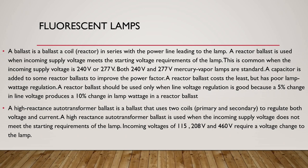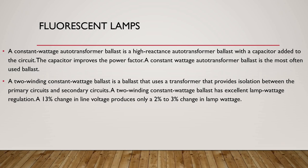A high reactance autotransformer ballast uses two coils — primary and secondary — to regulate both voltage and current. It is used when the incoming supply does not meet the starting requirements of the lamp, such as incoming voltages of 115, 208, or 460 volts. A constant wattage autotransformer ballast is a high reactance autotransformer ballast with a capacitor added to the circuit to improve the power factor, and it is most often used. A two-winding constant wattage ballast uses a transformer that produces isolation between the primary and secondary circuits and has excellent lamp wattage regulation — a 13% change in line voltage produces only a 2% to 3% change in lamp wattage.